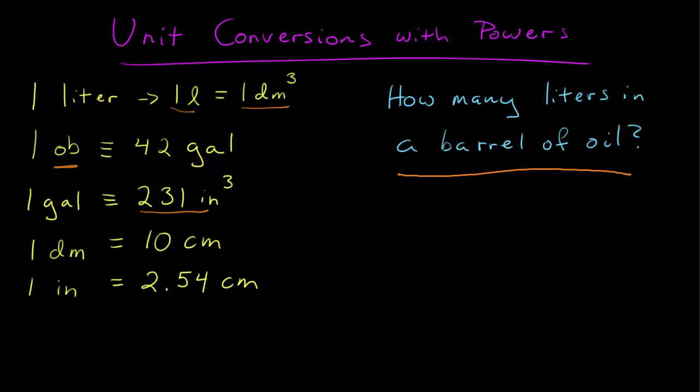So now I have cubic inches, and I want to get that into the metric system. I know that conversion: one inch is 2.54 centimeters, and I know the conversion between decimeters and centimeters. So I can get from barrels to gallons to cubic inches to cubic centimeters to cubic decimeters, which is a liter.